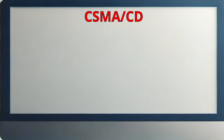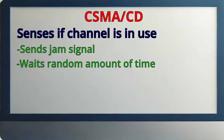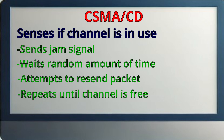Another concept to understand is an algorithm used with all half-duplex devices called Carrier Sense Multiple Access Collision Detection, or CSMA/CD. It's basically a protocol that senses if a data channel is already in use and prescribes steps for trying to resend the transmission. The steps are: send a jam signal, wait for a random amount of time, and then attempt to send the frame again. The process repeats until the transmitting station senses no other signals in the channel and sends the packet.